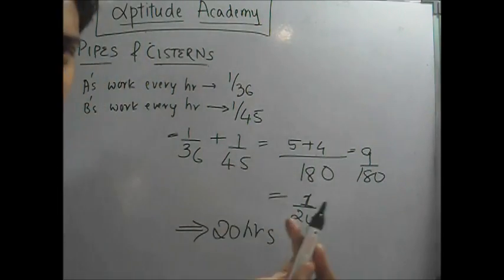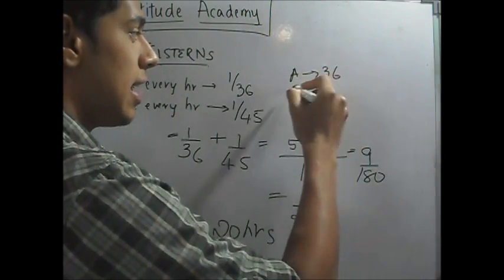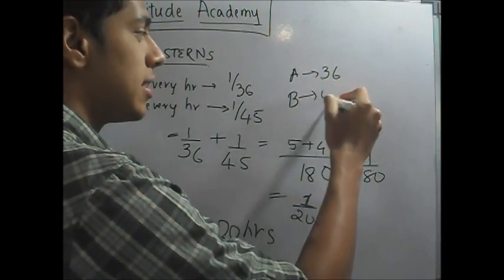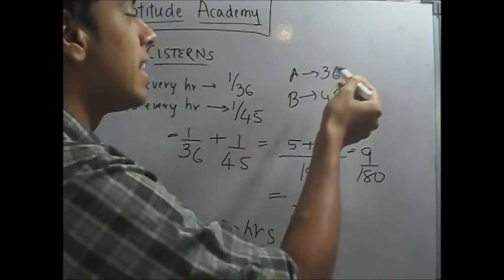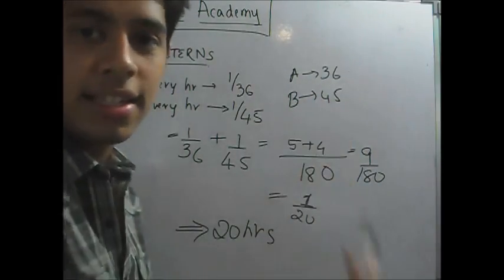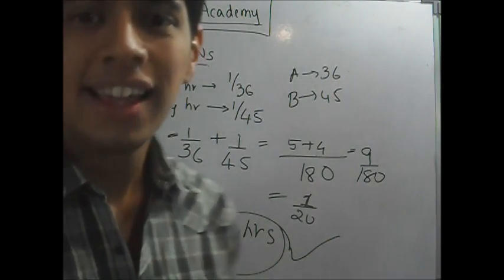So you see, it's obvious. If A fills the tank in 36 hours and B fills it in 45 hours, you know that the number will definitely be below the least of this. So it will definitely fill faster than 36 hours. Your answer is 20 hours. Makes sense. Right?